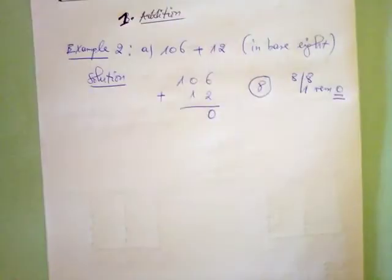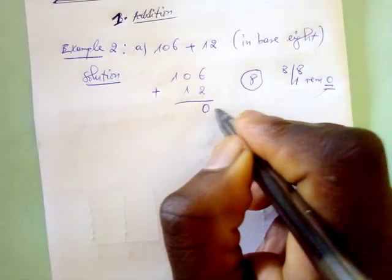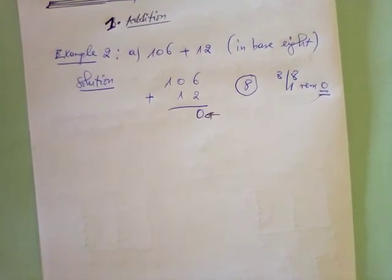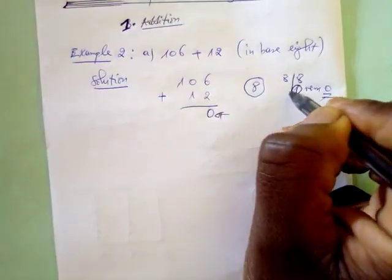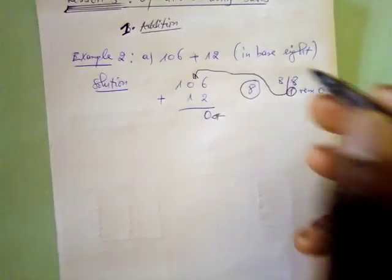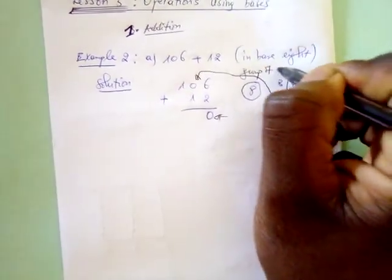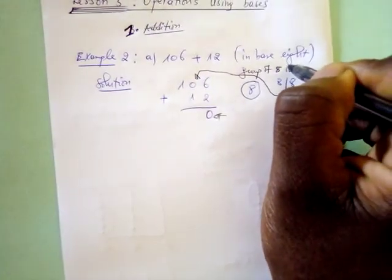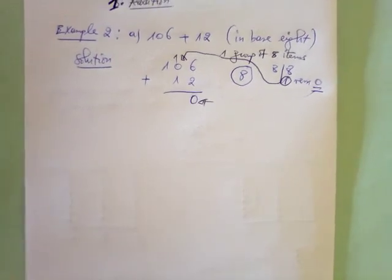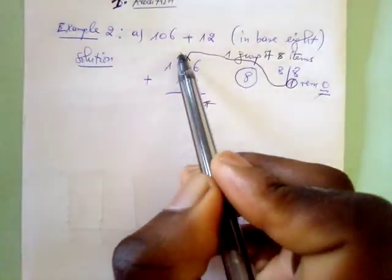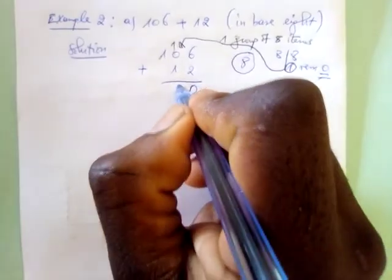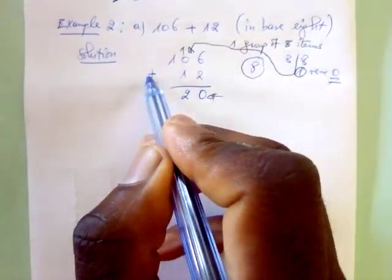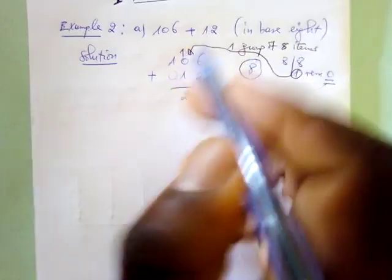This remainder zero is written in the ones place. The quotient one represents one group of eight items and is carried over to the next column. Now we add this carried one with the digits above: one plus one plus one equals two, and one plus zero equals one.